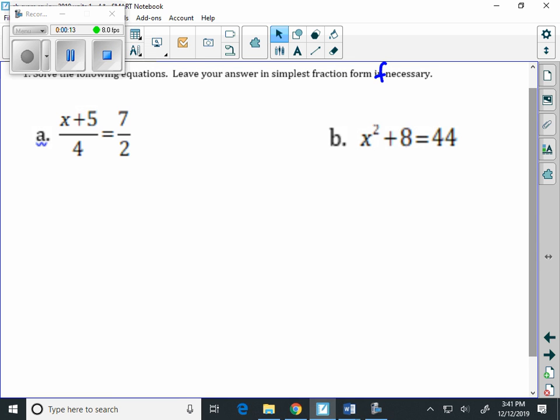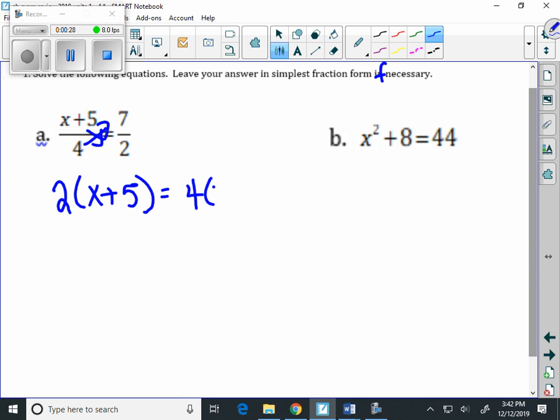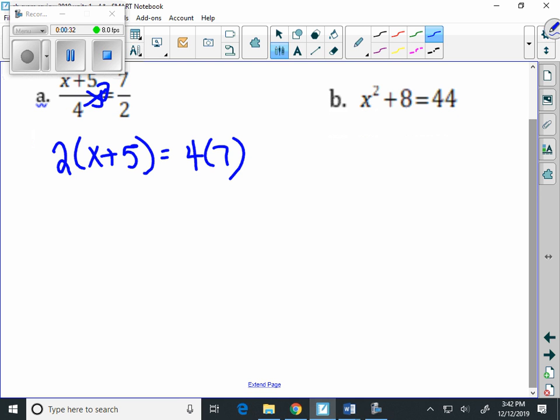The best way to solve this problem is to cross multiply. So we're going to multiply this times this, and this times this. In other words, it's going to be 2 times X plus 5 equals 4 times 7. We're going to have to use distributive property, and we end up with 2X plus 10 equals 28.